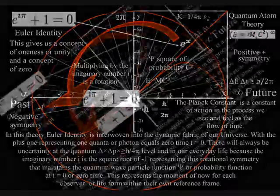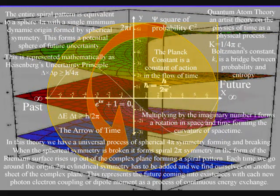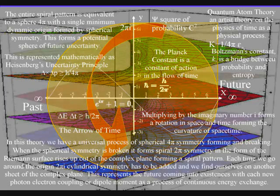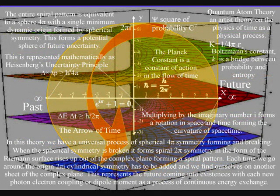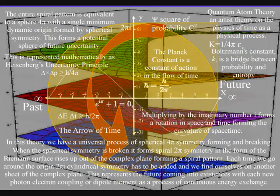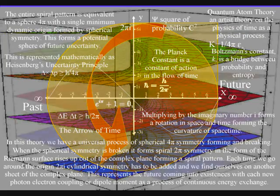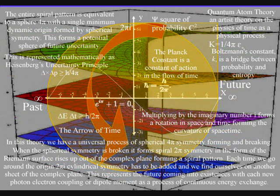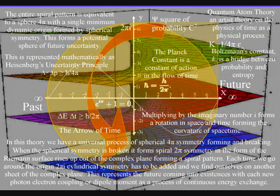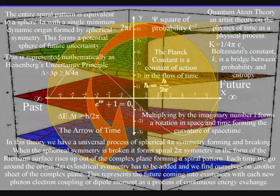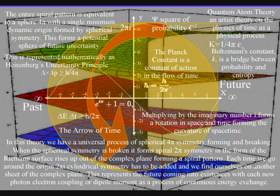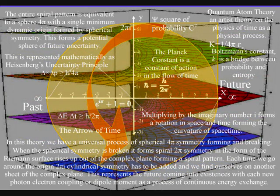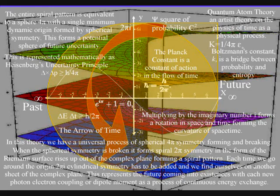When the spherical symmetry is broken it forms spiral symmetry in the form of the Riemann surface rising up out of the complex plane forming a spiral pattern. Euler's identity is at the heart of this process. The easiest way of looking at this is that the only number you could add to the number one to get zero is minus one, and this forms a rotation that breaks the spherical symmetry. Also in mathematics the imaginary number i is the square root of minus one. There is no objective understanding to this — you could say that this is just the way mathematics is. But in this theory the imaginary number i is the square root of minus one because it is part of a physical process linked to the square of probability.